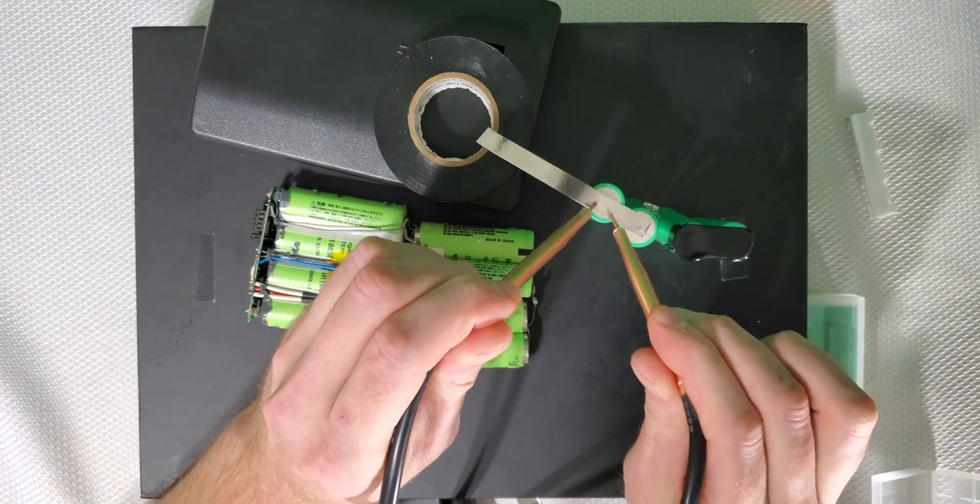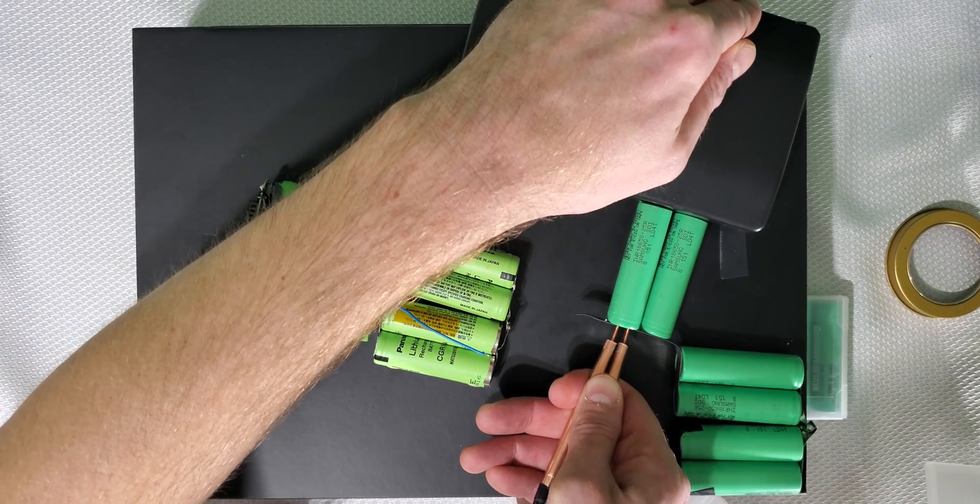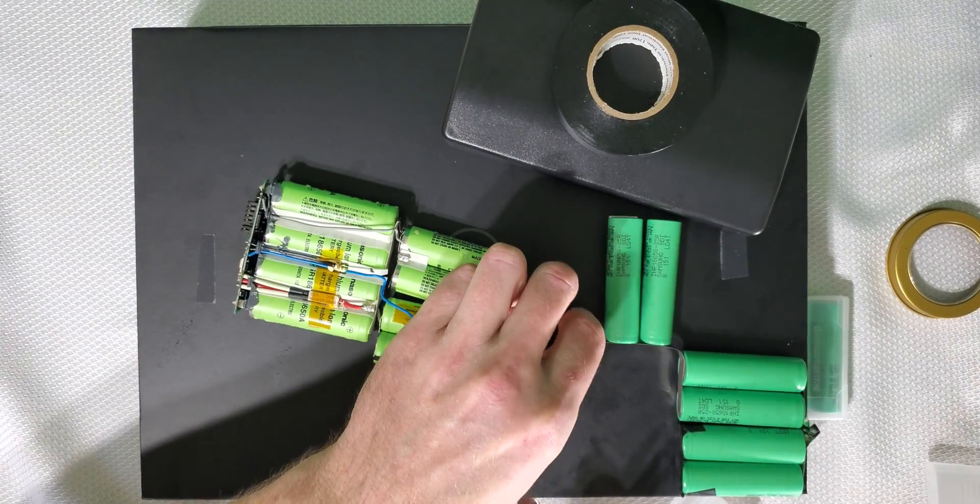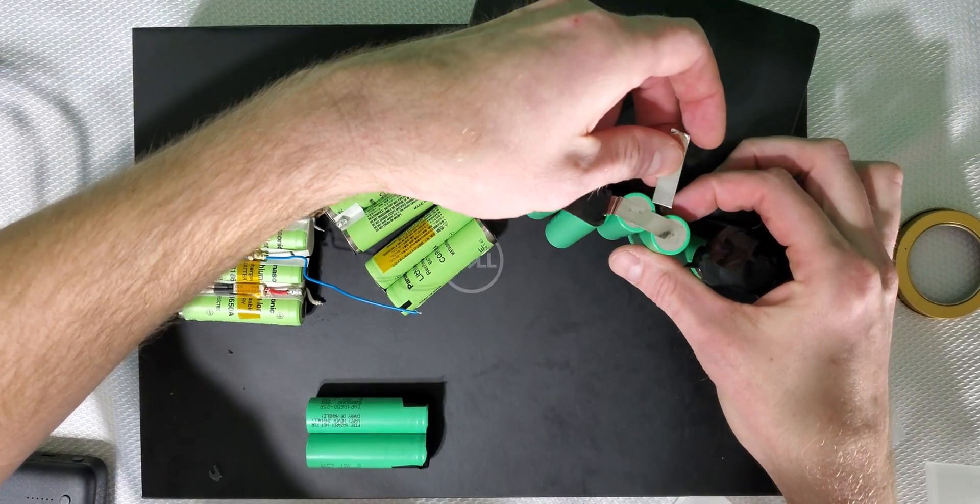Using the spot welder is pretty straightforward, as long as you don't cross the streams. Since these batteries are in such close proximity with each other, let's make sure to cover the terminals with electrical tape to prevent any mishaps.